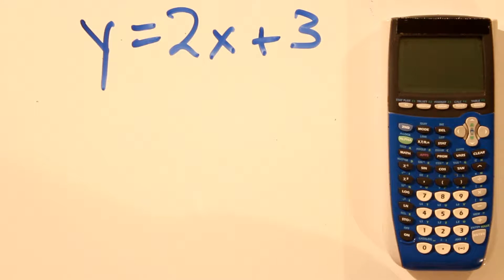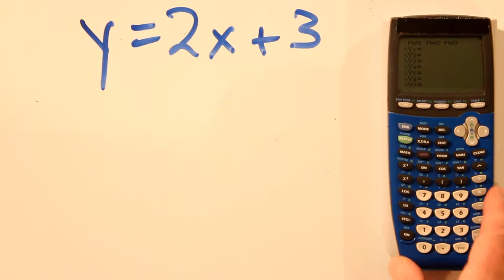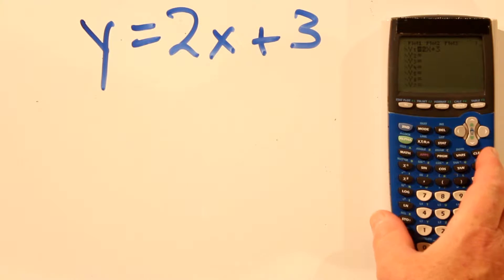In this video, we're going to see how to graph greater than and less than on your graphing calculator. Let's start with y equals 2x plus 3 and graph that line. That's a typical graph. Let's hit the y equals button again.